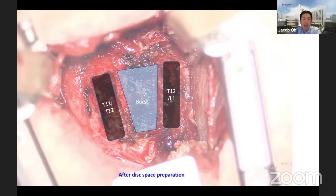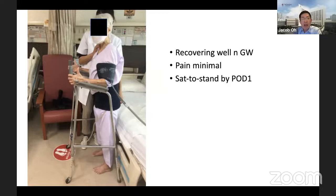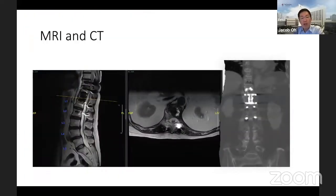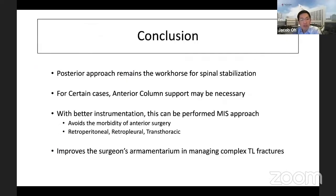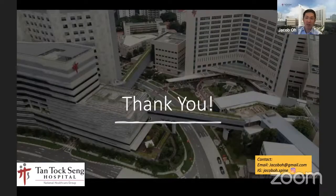At T11-12, T12-L1, the burst fracture is there. After the corpectomy, we put a cage - that's how it looks. On day one I got her to stand up. Look at the decompression compared to what was there before - astounding. The fusion in these corpectomy cases is remarkable. To finish: the posterior approach is great and remains the workhorse for most cases. But for certain cases, anterior column support may be necessary. Because we can now do this using an MIS approach, so much of the morbidity is gone. We can have all the advantages without the morbidity, and we can offer this to elderly patients and get them up and about much faster. It improves the surgeon's armamentarium in managing all fractures. Thank you for your attention - I'm happy to take any questions.